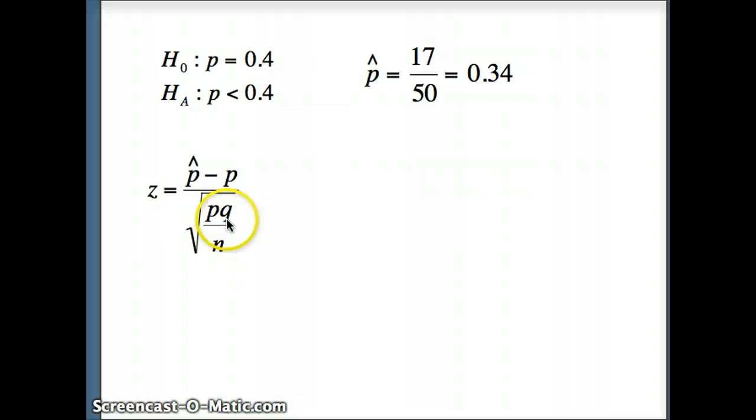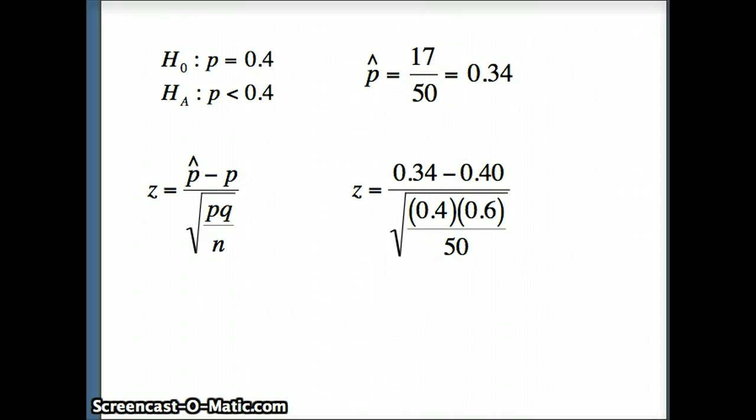pq, p will be 0.4, q will be 0.6. q is simply 1 minus p, and N is 50. So here are our numbers, and we are going to go ahead and evaluate this using Excel.